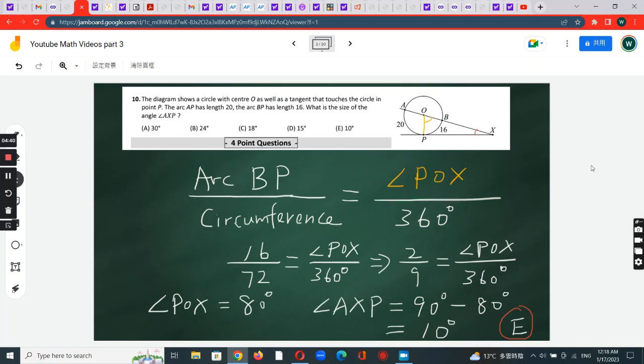Once we have this set up, we can do some substitution. Arc BP is 16, and the circumference we calculated previously was 72. So this whole fraction becomes 16 over 72.